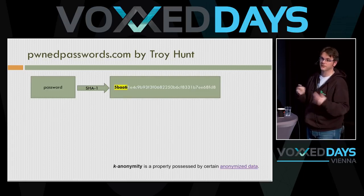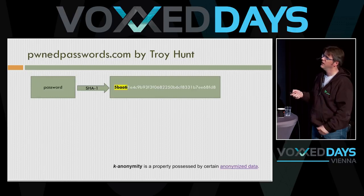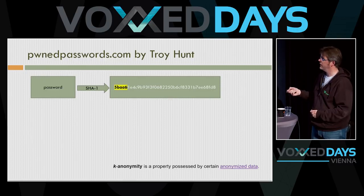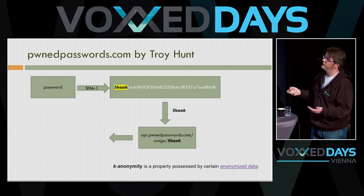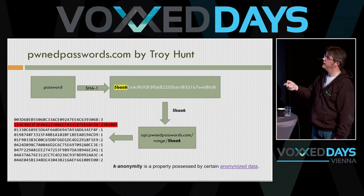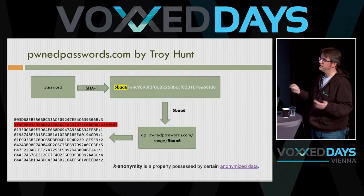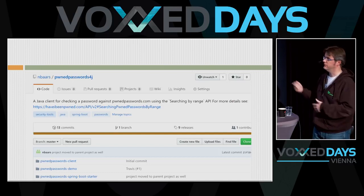Troy Hunt's new API at pwnedpasswords.com lets you check if a password was part of a breach. In version 1, you sent the full SHA-1 hash of the password, but people complained that could expose which password the user wanted. So together with Cloudflare, they created k-anonymity: you take the SHA-1 of the password, take the first 5 characters, send those to the API, and get back a complete list of all hashes starting with those 5 characters. You then check locally if your full hash is in that list. I created a Spring Boot starter that wires up this bean so you can just check passwords automatically.